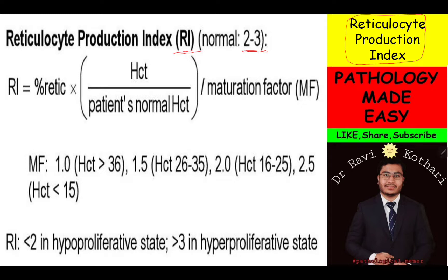First, the formula of the RI is the percentage of retic, or I must say corrected retic, multiplied by HCT of patient upon HCT of normal. This is the formula of corrected retic, which is then divided by the maturation factor, which I have discussed in my previous video also.